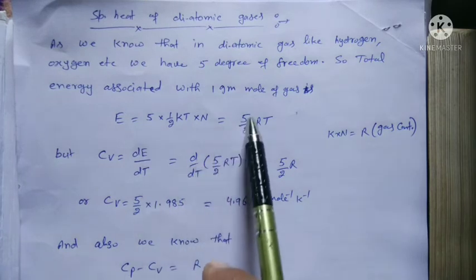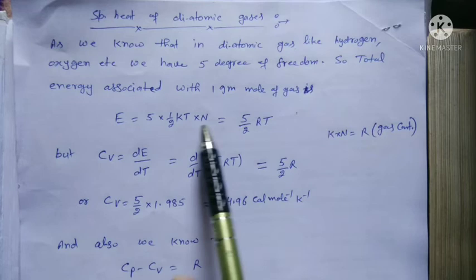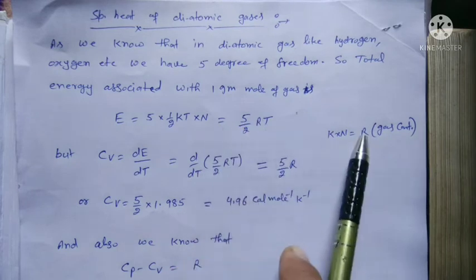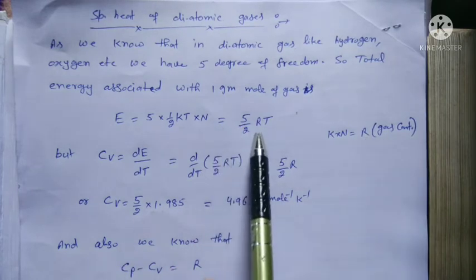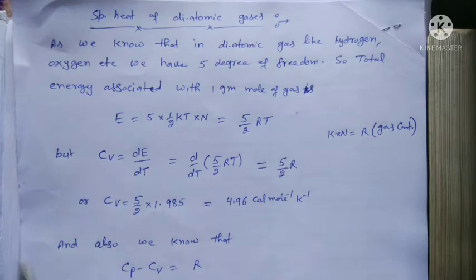And we have 5 degrees of freedom, so we multiply by 5. This becomes (5/2)RT, because k × N becomes R, where R is the gas constant. So it's (5/2)RT.